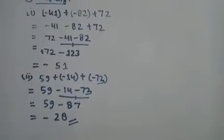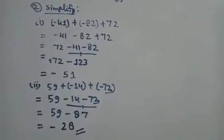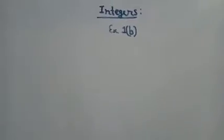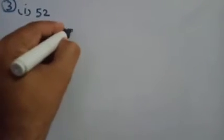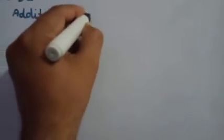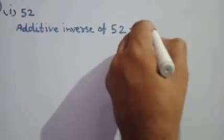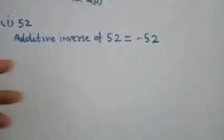You will solve the remaining parts in the same way. Now question number 3: Define the additive inverse. Part 1: 52. You have to note down the additive inverse of 52. The additive inverse of 52 is equal to minus 52 — you change the sign and the value remains the same.